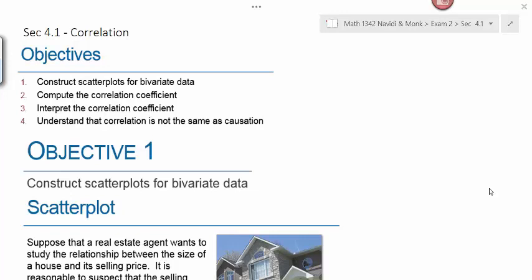Section 4.1 is correlation, probably the first time we've heard this word, but after tonight hopefully it'll make more sense. The objectives for this section are to construct scatter plots for bivariate data. Bivariate just means there's two variables - bi means two, variate means variables.